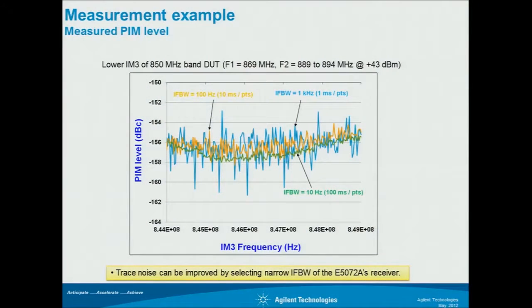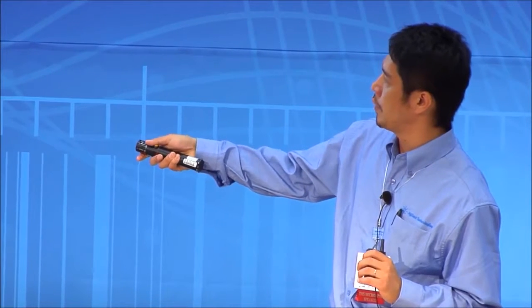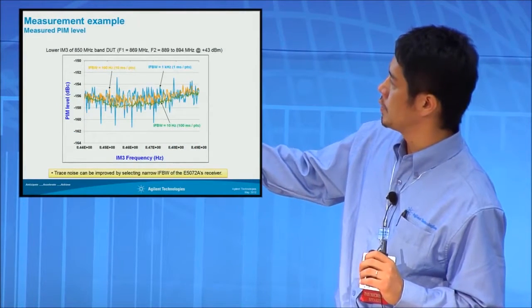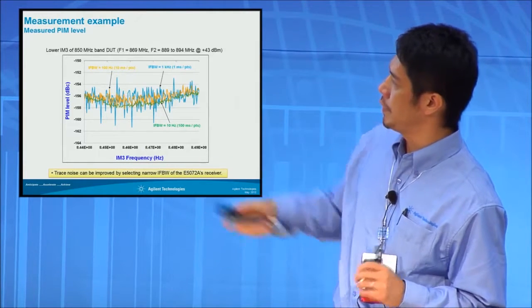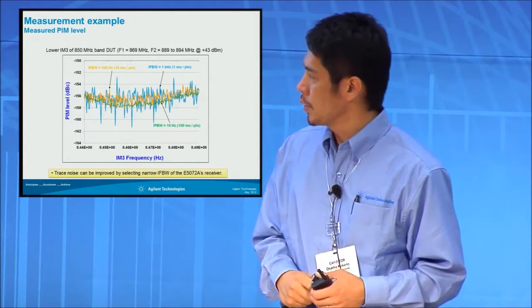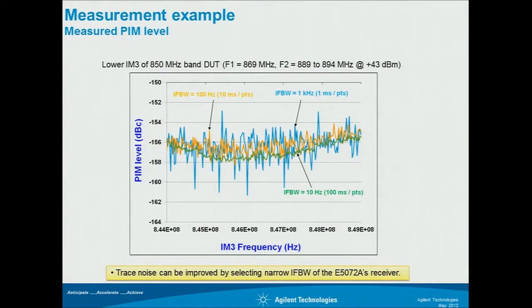This is a comparison of measurement speed and noise level. The green line represents the cleanest, lowest noise level result, with an IF bandwidth of 10 Hz and a measurement speed of 100 ms per point. If you change the IF bandwidth, you can achieve faster measurements, but the noise level will be higher. For example, the orange line has a higher noise level but a faster measurement speed of 10 ms per point. So if you are measuring a PIM level around 155 dBc, a 100 Hz measurement setting would be good enough.